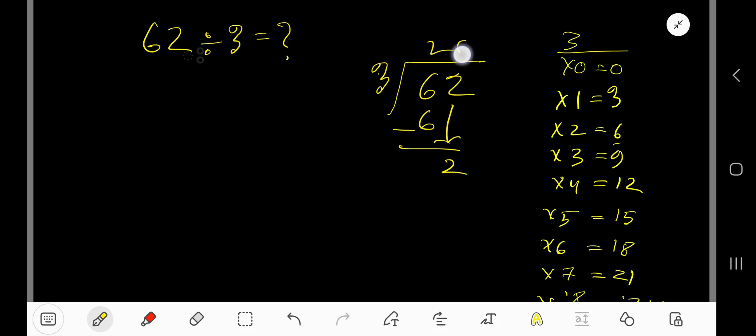As 2 is less than 3, 0 times. 0 times 3 is 0. Subtract to get 2. So our answer is 20 remainder 2. But if you want to write your answer in decimal form, then take your decimal and add number of zeros.